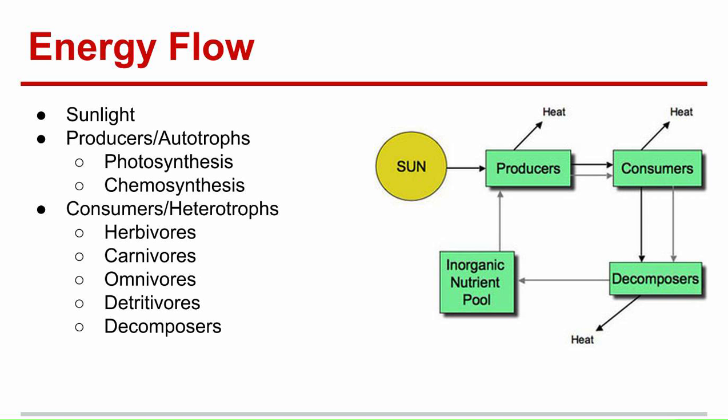In ecology, there is an energy flow starting with the sun. The sun provides all the energy in ecology. The sun's energy is used by producers, also known as autotrophs, to provide their own food either through photosynthesis, the use of light.